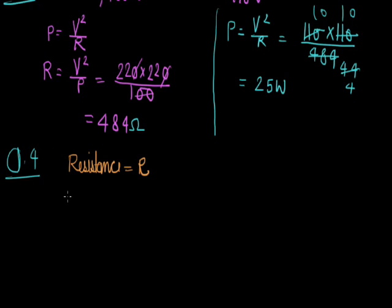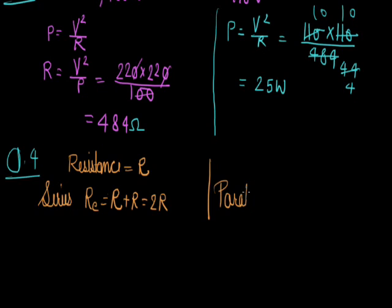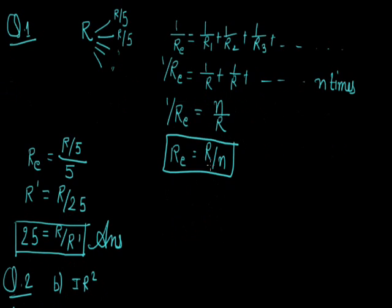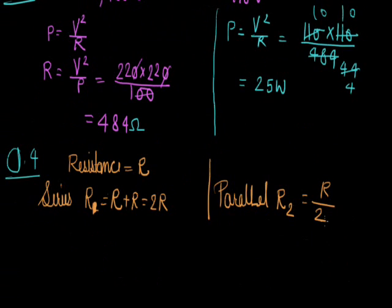They are first connected in series. If connected in series, their equivalent will be R + R = 2R. When they are connected in parallel, since they are same resistances using R/N with N=2, their equivalent resistance will be R/2.